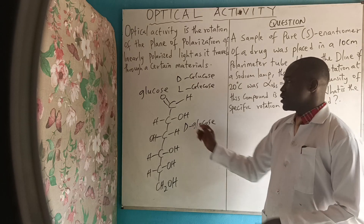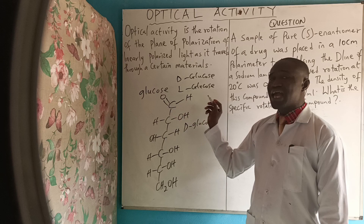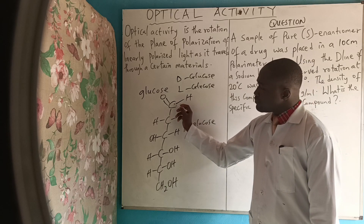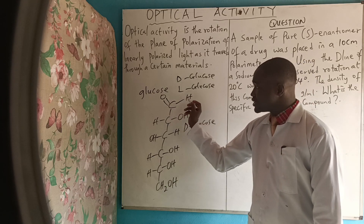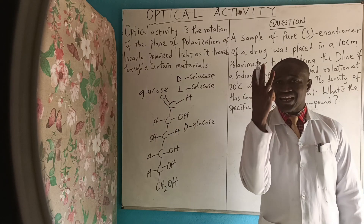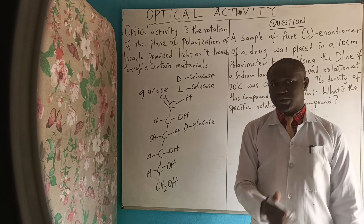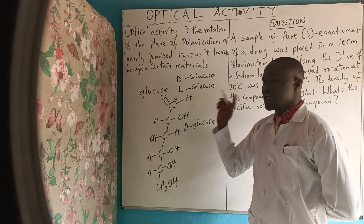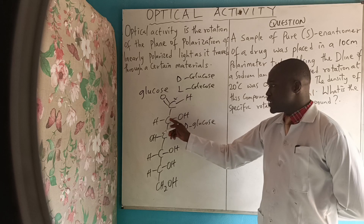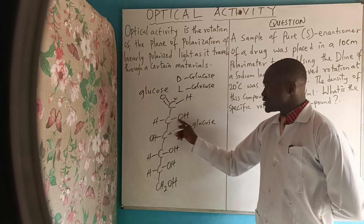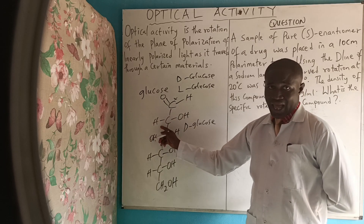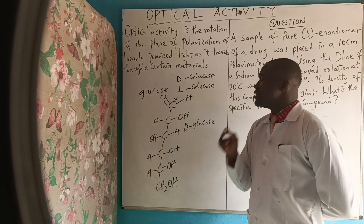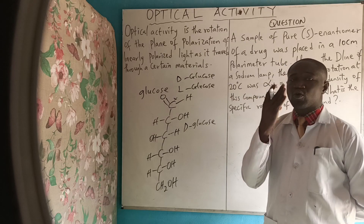Starting from the aldehyde carbon — carbon one — we check how many chemical species are bonded to it. At carbon one, there are only three chemical species bonded to it, so it is not a chiral center. Moving to carbon two, it is bonded to four groups: the hydroxyl group, a hydrogen atom, and two other chain segments — four different chemical species bonded to this carbon. We call carbon two a chiral center.